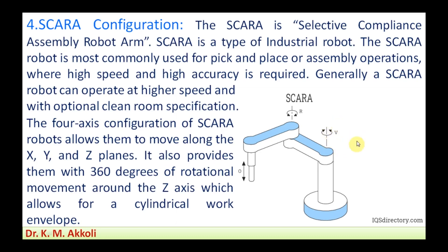SCARA robots can offer higher speed with optional clean room specifications. The four-axis configuration of SCARA robots allows them to move along the X, Y, and Z planes and also provides 360 degrees of rotational movement around the Z axis, allowing for a cylindrical work envelope in any direction. Therefore, SCARA configuration has much importance in industrial applications.